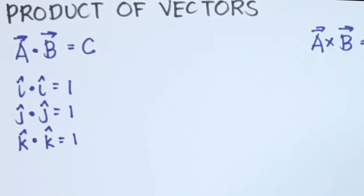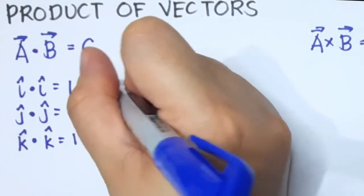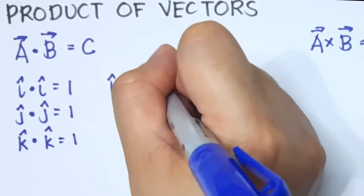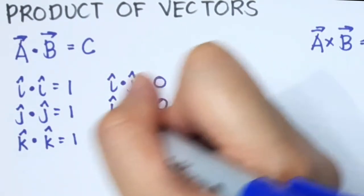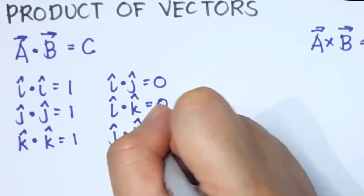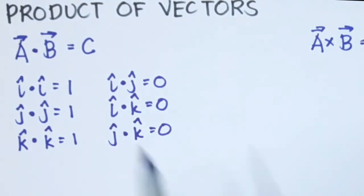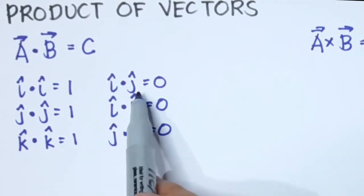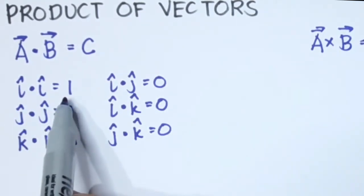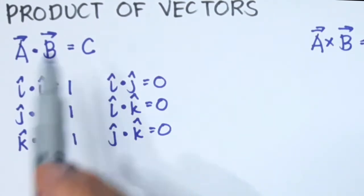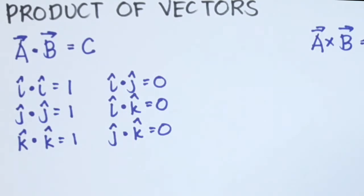This is the property of the scalar product: it only has a value if we multiply the component of vector a in the same direction as the component of vector b. If we multiply vectors with different directions — i dot j equals zero, i dot k-hat equals zero, and j dot k equals zero. So if two vectors are perpendicular, the result is zero; if they are parallel, the result is one, which is a scalar.